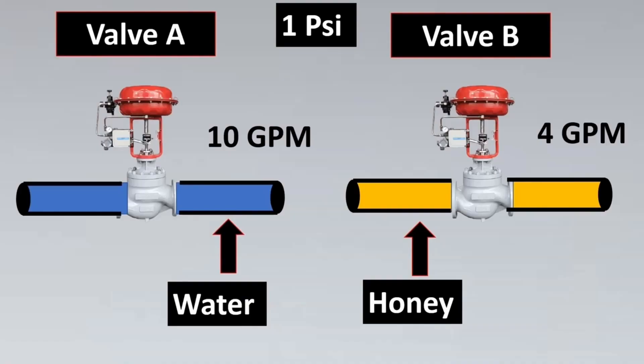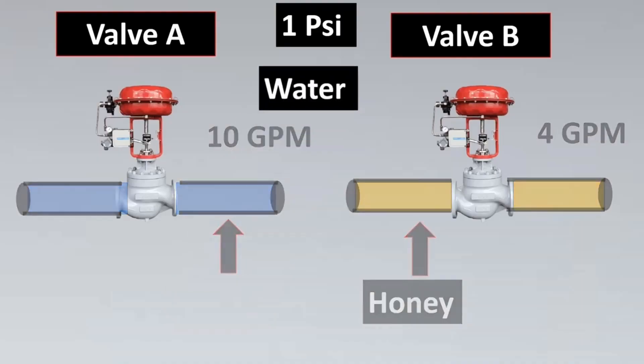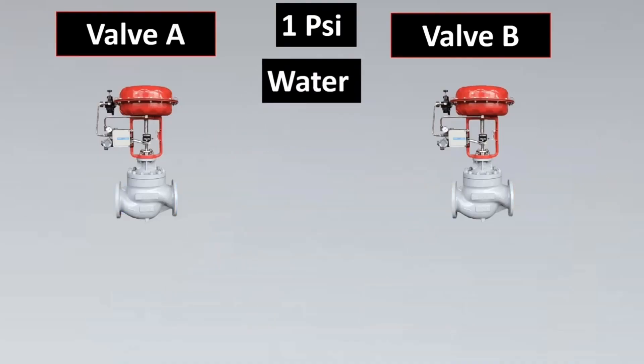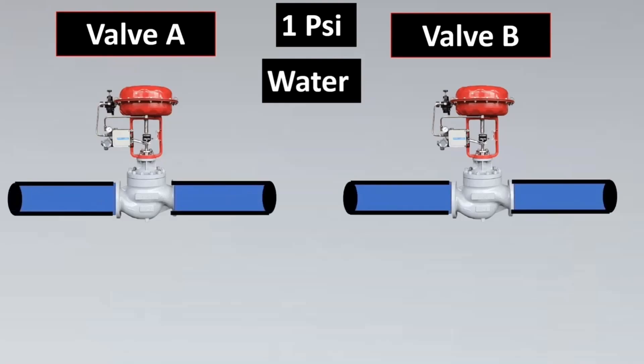We all know that honey is very dense, so it will have a lower flow rate compared to water. Even though the valves are made of same construction, we have to ensure the liquid between them is the same. Let's select water because water is one of the most available substances and very easy to be found at any site or vendor location.